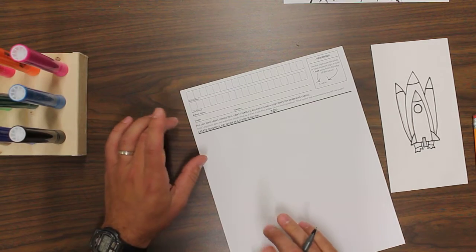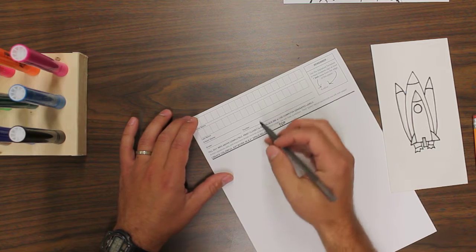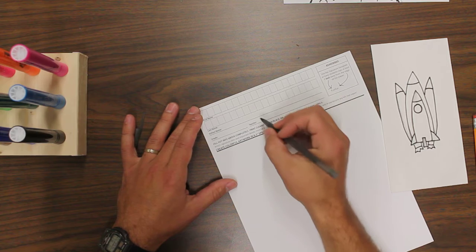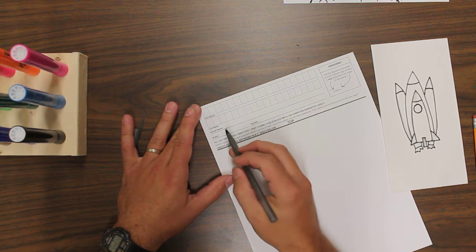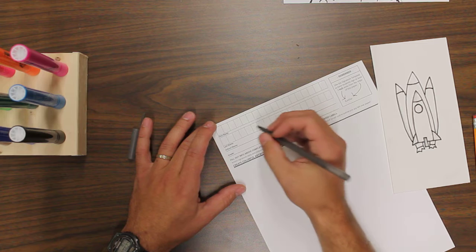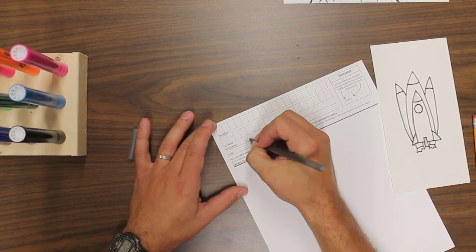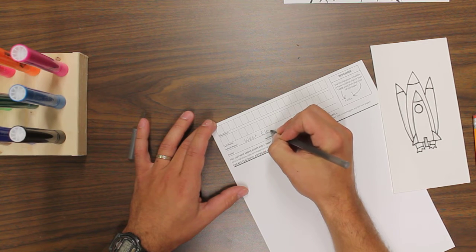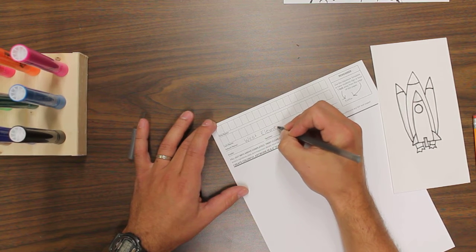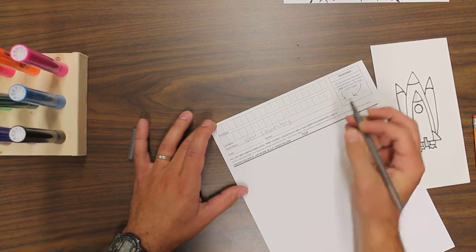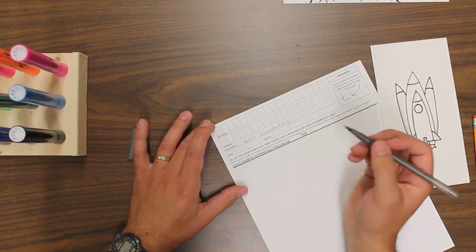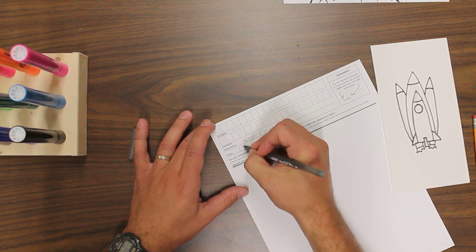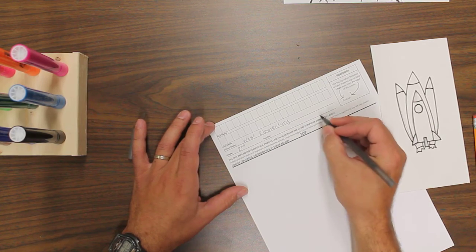But I would like you to help me out because this part isn't quite as important. I would like you to write with a pen as neatly as you can. I want you to write your teacher's name right here and then school name, I want you to write West Elementary, E-L-E-M-E-N-T-A-R-Y, and then put your grade level which is second. And you could put 2ND and then write your teacher's name right there.